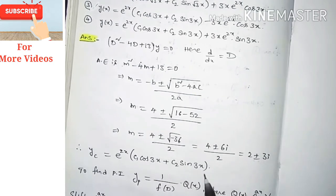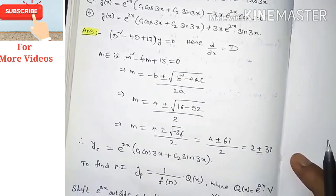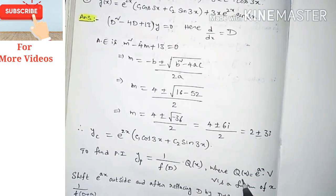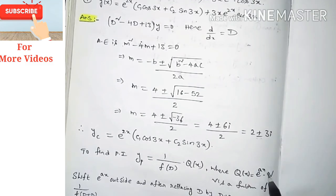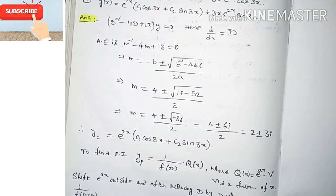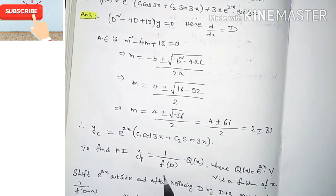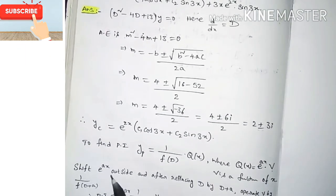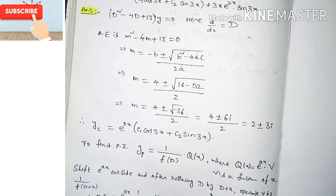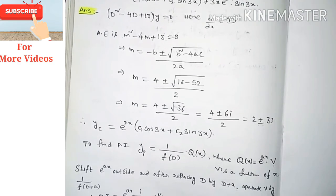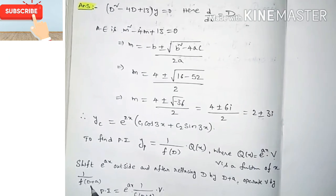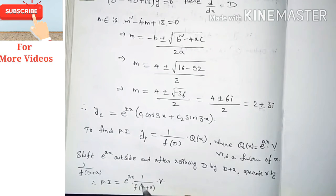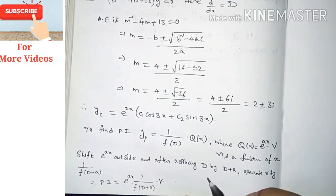Now we find the particular integral. yp = (1/f(D))·Q(x), where Q(x) is of the form e^(ax)·v, with v a function of x. To find the particular integral of this type of function, we shift e^(ax) outside and replace D with (D + a), giving yp = e^(ax)·(1/f(D+a))·v.